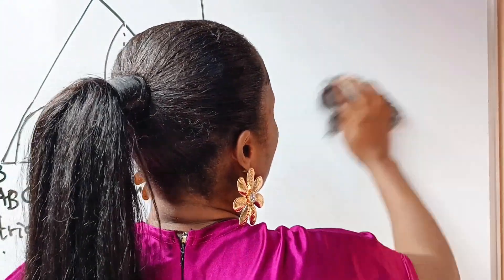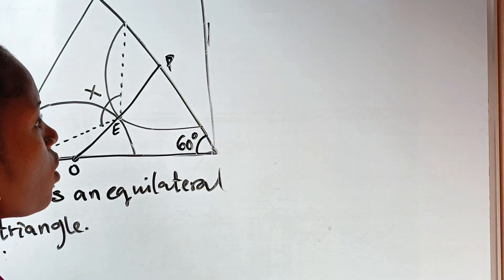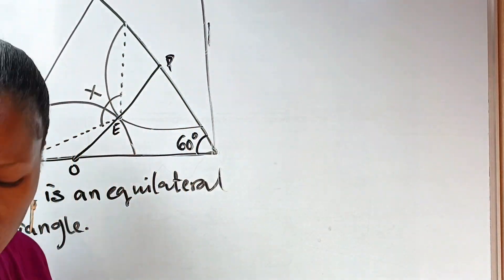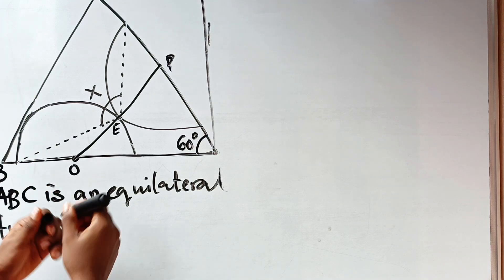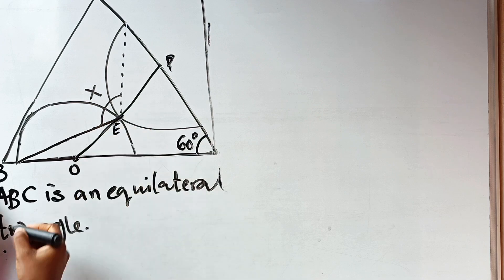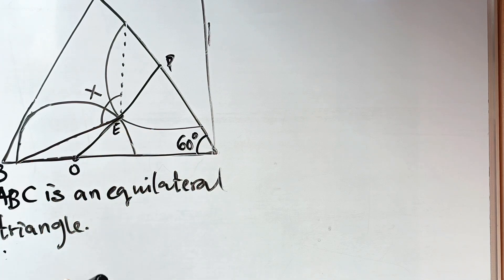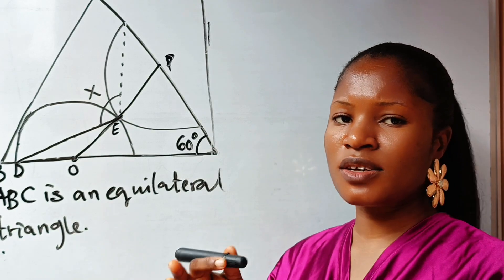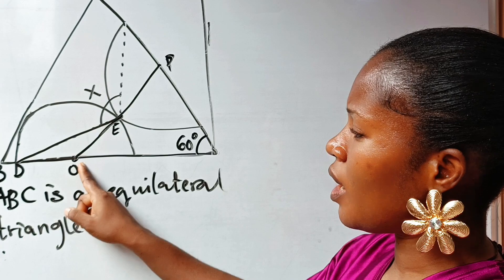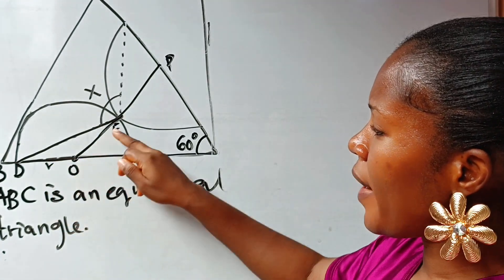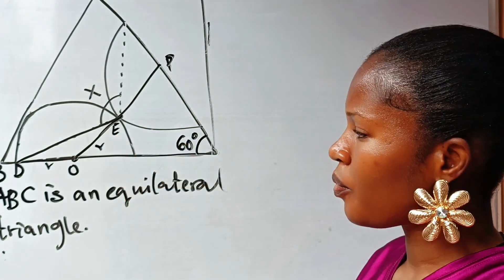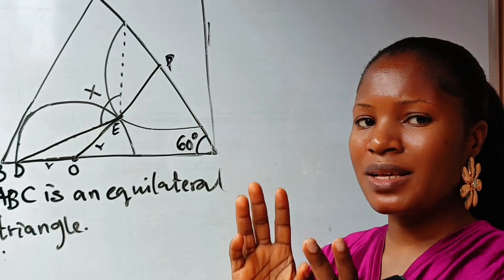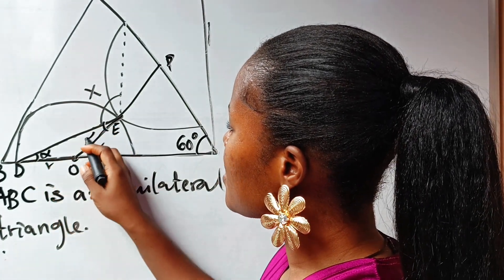We have limited information but what we have is enough to get the value of x. Having joined that line, we look at this triangle here — let's call this point D. Triangle OED is an isosceles triangle because from O to D is the radius r, and OE is also the radius r. When two sides of a triangle are equal, it is isosceles and the base angles are equal. So if we call this angle alpha, this other base angle is also alpha.